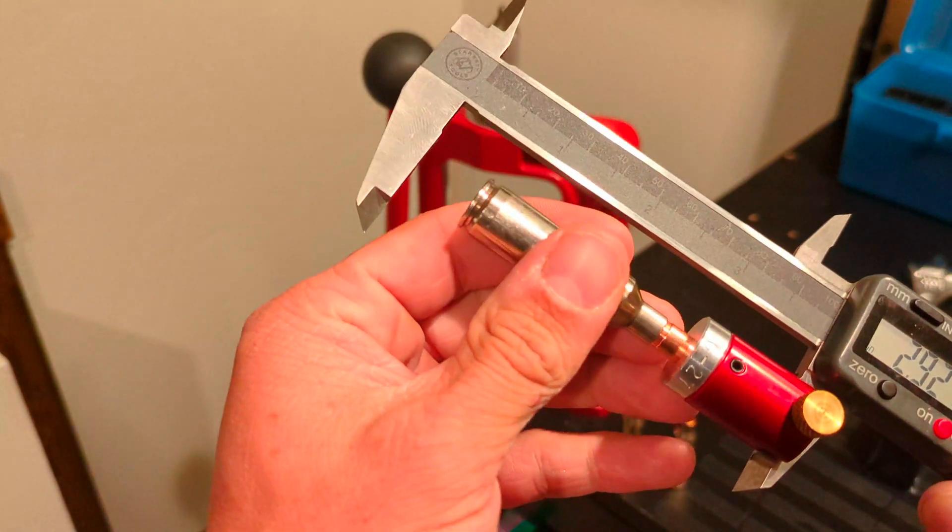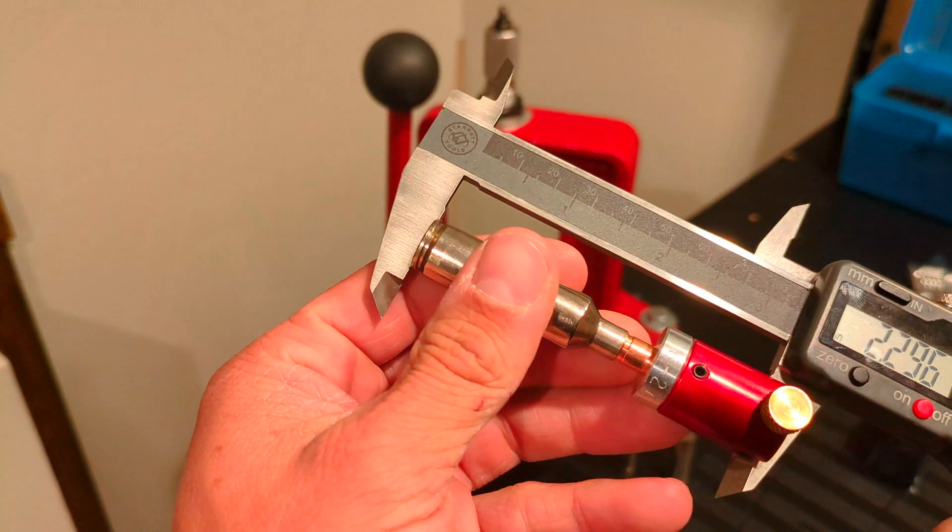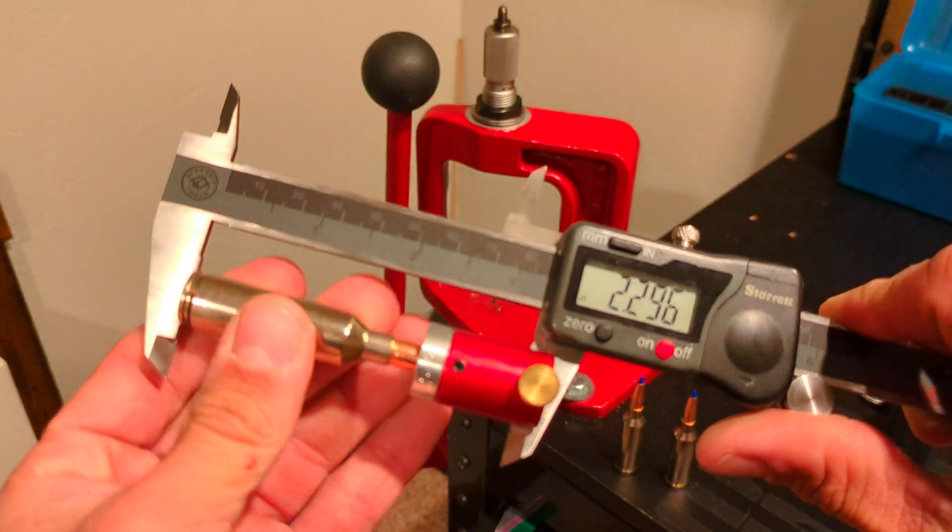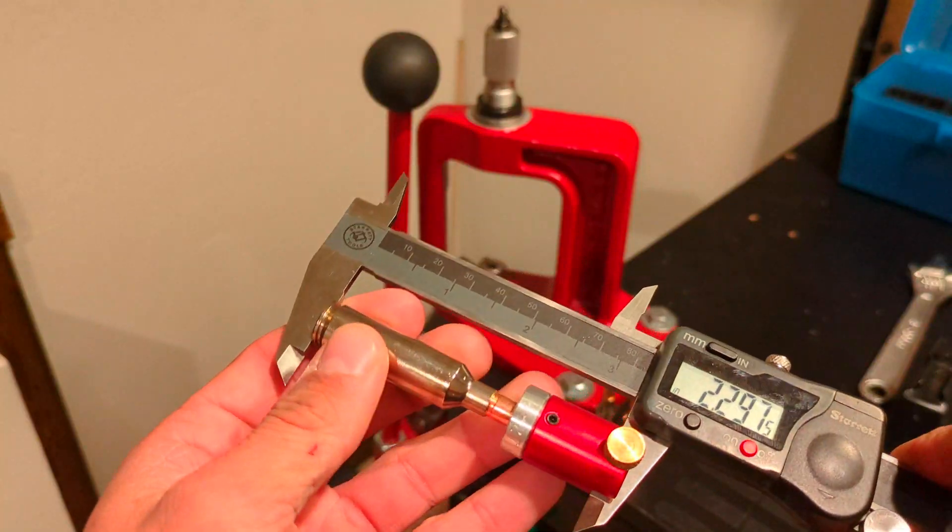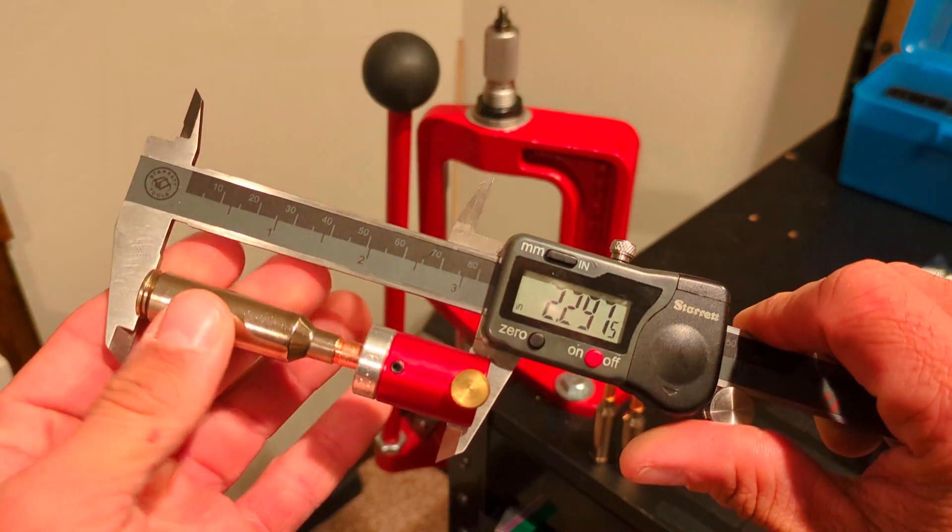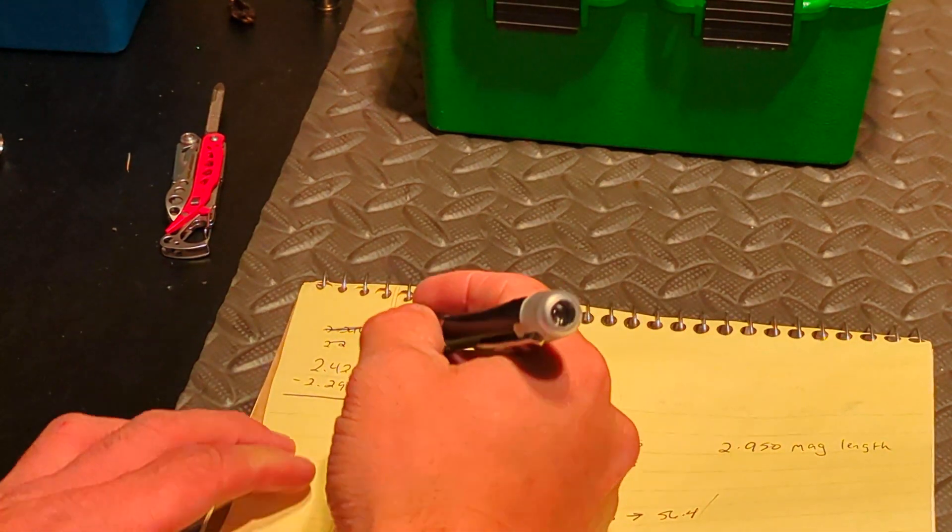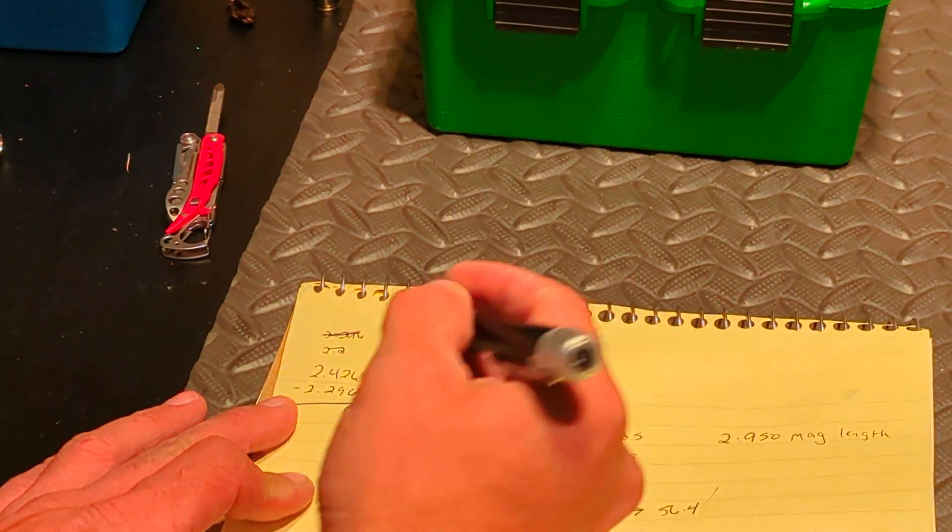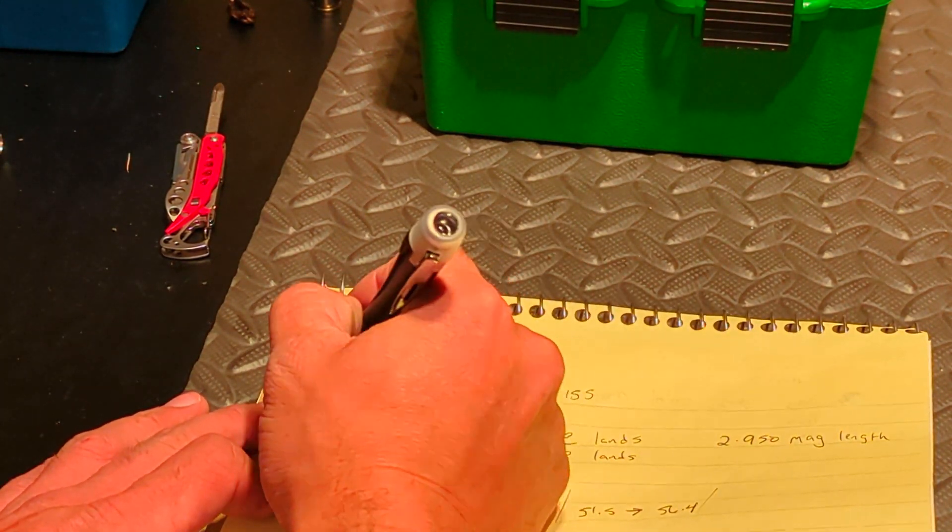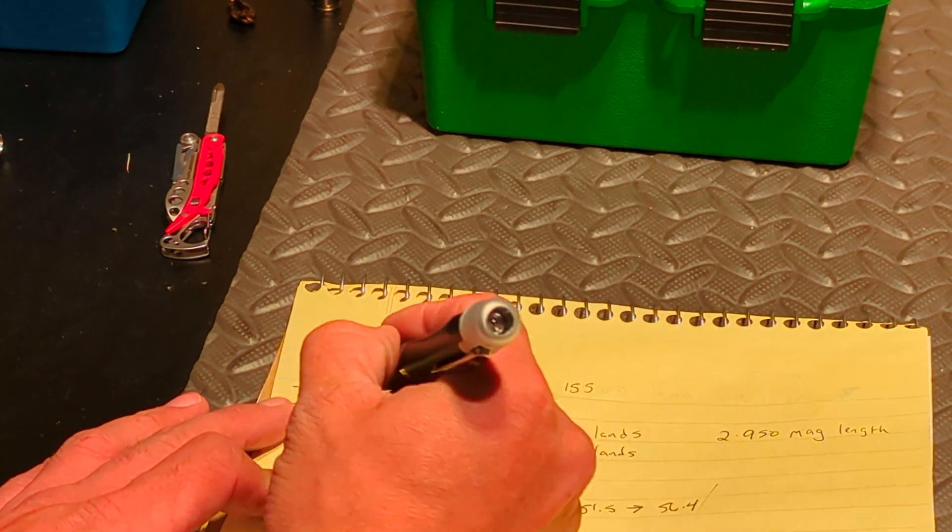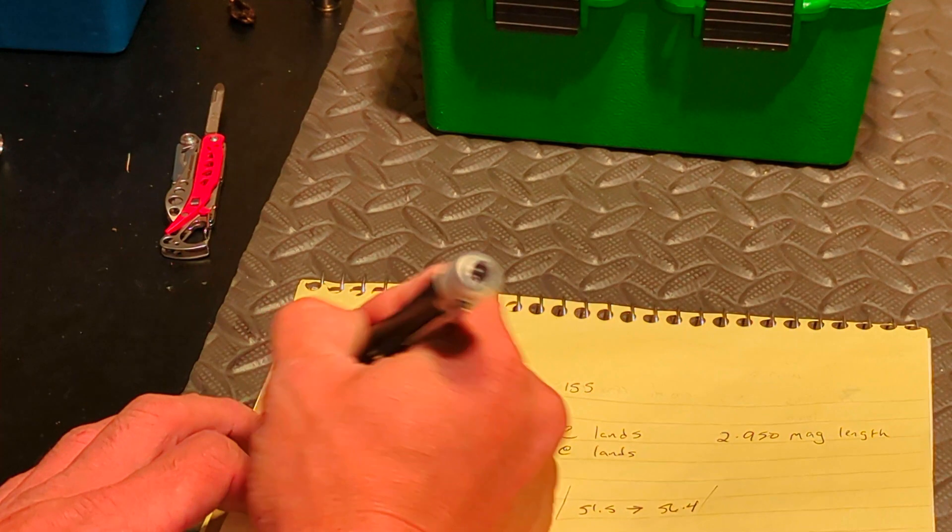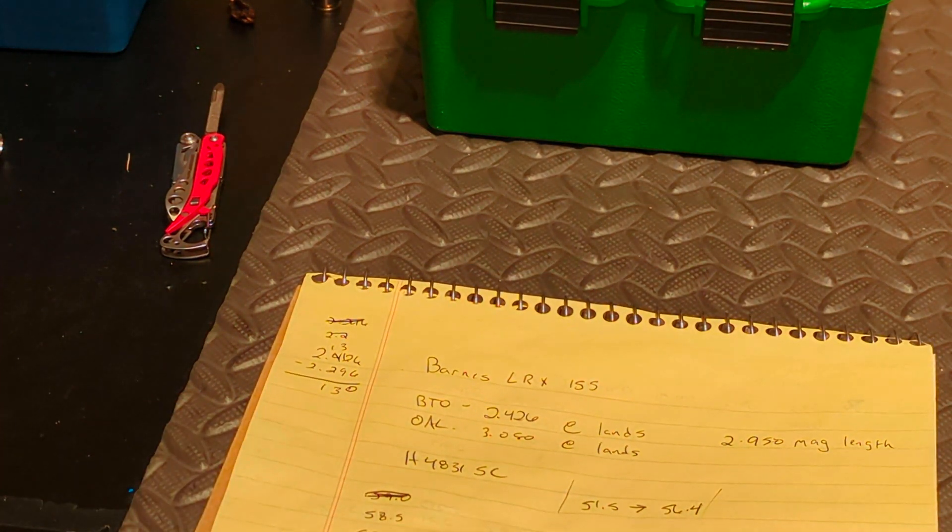2.295. 2.296. Oh, there we go. All right, back to elementary math. Got a calculator. So we'll do this here with a 3. Carry that. We are at 3, 1. So we have 130 thousandths jump.